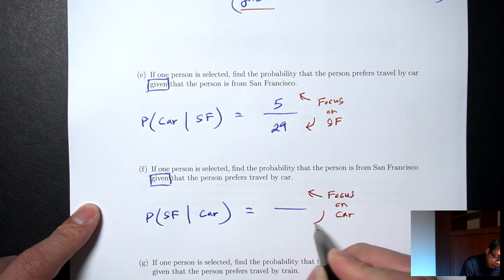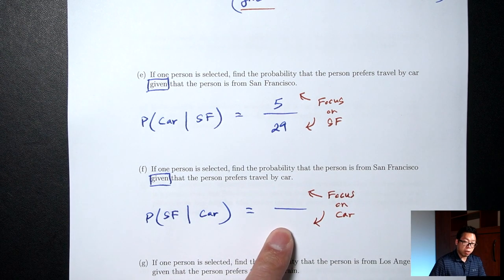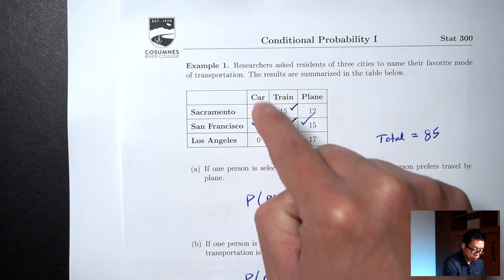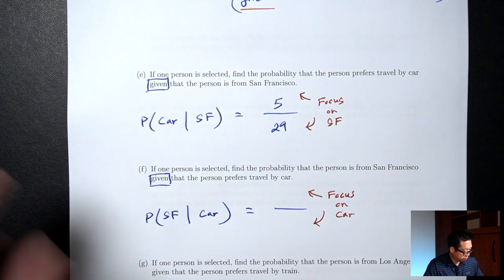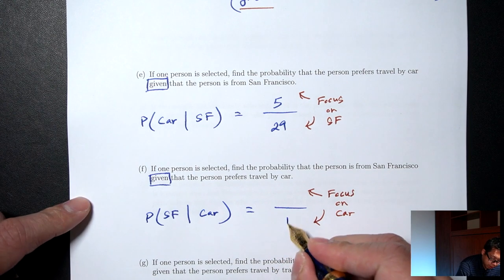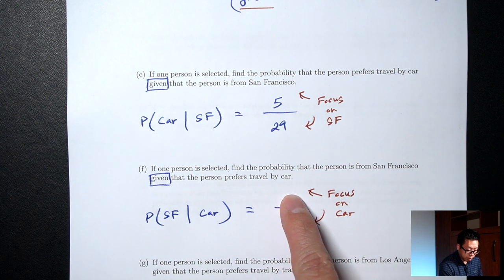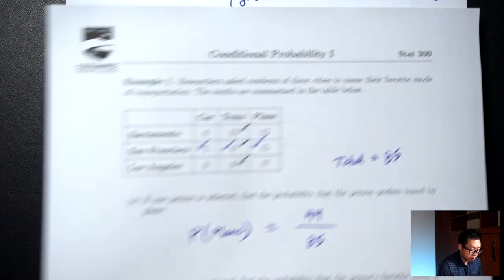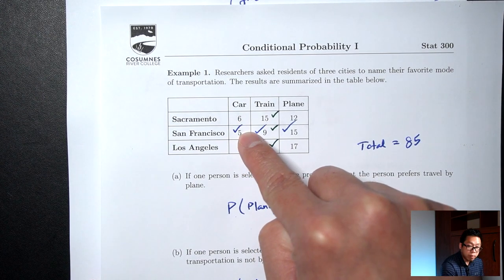Focusing just on the car numbers for the bottom — the total of 6, 5, and 0 — that's 11. Then for the top, still focusing just on the car numbers, how many are SF? The answer is 5. So P(SF | car) = 5/11.